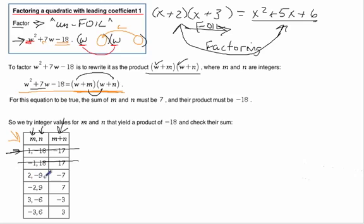What else could we try? 2 and negative 9. That gives a negative 7. That's getting close, but it's the wrong sign. If we switch them and say negative 2 and 9, that makes negative 18 when we multiply, and when we add them, we get a positive 7, and what do you know? Bingo.